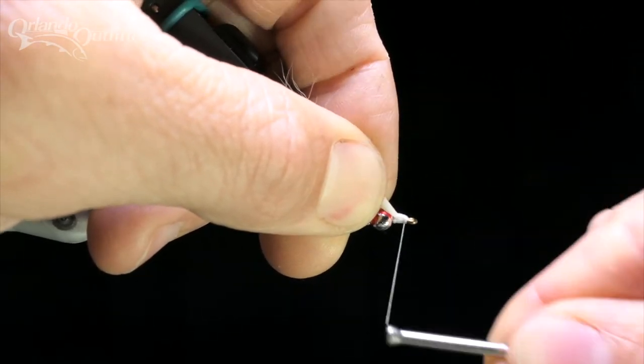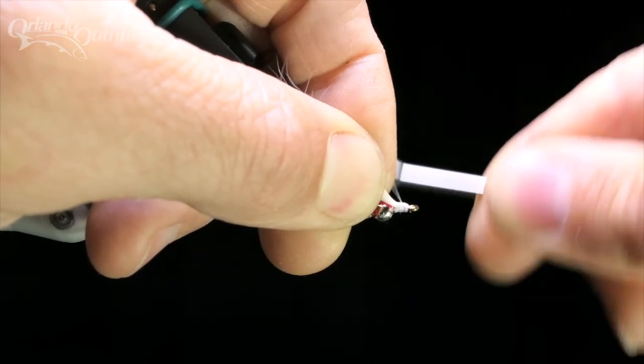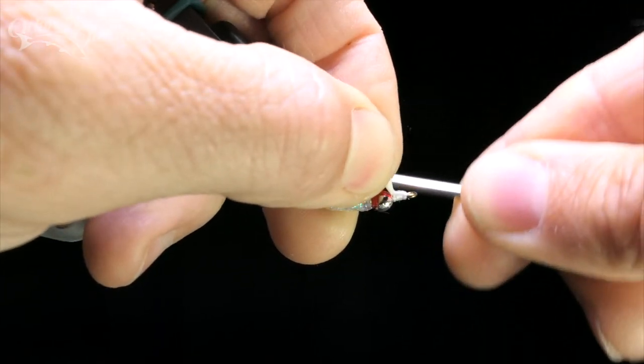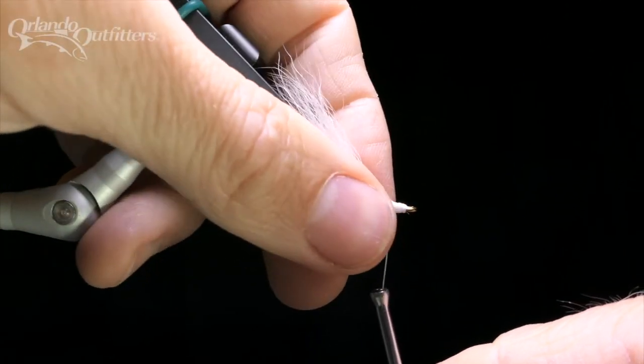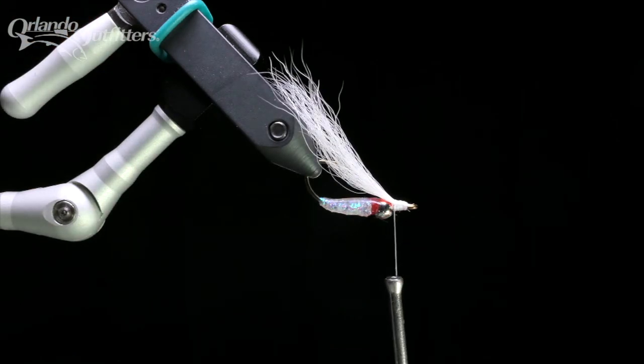When the calf tail is where you want it, wrap it down tightly, holding it together as you wrap back towards the bead. Be careful not to wrap too tightly right against the bead, or you'll risk causing the materials to fan out around the bead.